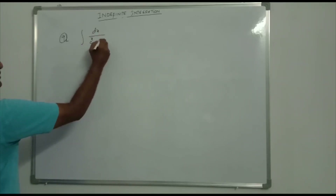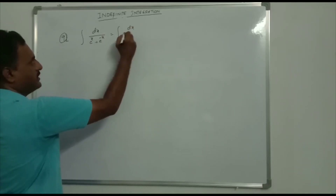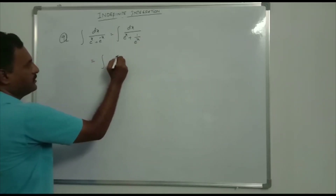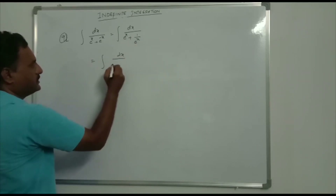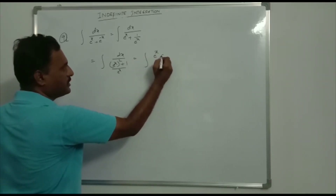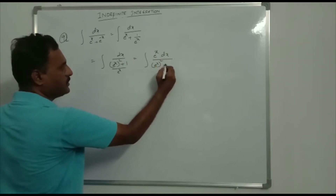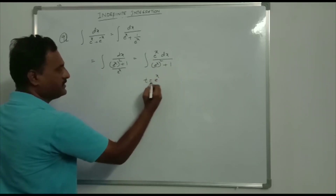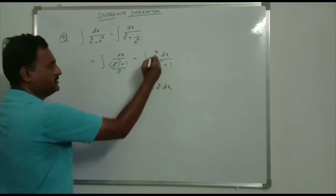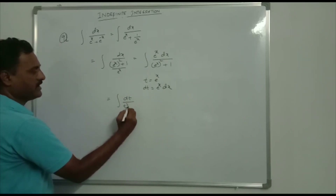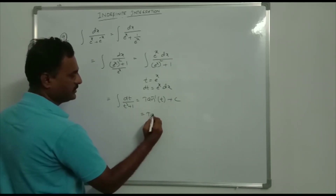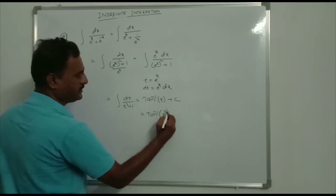Integration of dx/(eˣ + e^(-x)). This equals dx/(eˣ + 1/eˣ), which is eˣ dx/(e^(2x) + 1). Let t = eˣ, so dt = eˣ dx. Substituting: integration of dt/(t² + 1) = tan⁻¹t + c. That is equal to tan⁻¹(eˣ) + c.